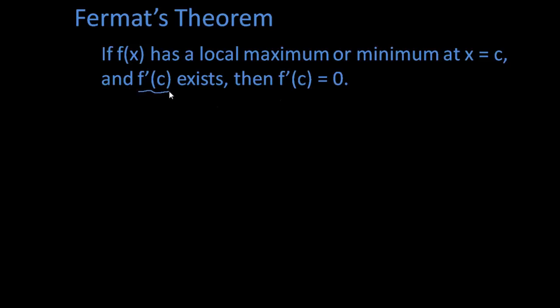So the fact that it says f prime of c must exist means that you can't have corners and you can't have vertical tangent lines, because at those two places the derivative doesn't exist.